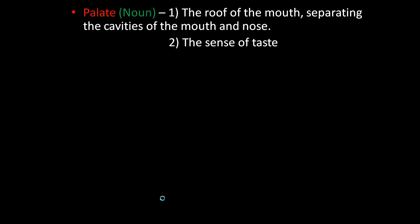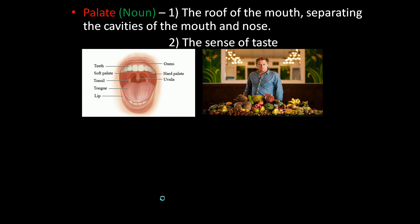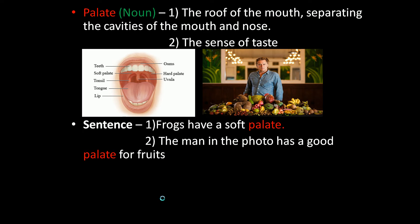The next word is palate. Palate is a noun. The first meaning is the roof of the mouth, separating the cavities of the mouth and the nose. The second meaning is the sense of taste. The first photo shows where the palate is located — between the cavities of the mouth and the nose. The second photo shows a man with a good sense of taste in fruits, meaning the man has a good palate for fruits. The first sentence is: frogs have a soft palate, meaning they have a soft roof of the mouth. The second sentence is: the man in the photo has a good palate for fruits, referring to the sense of taste.